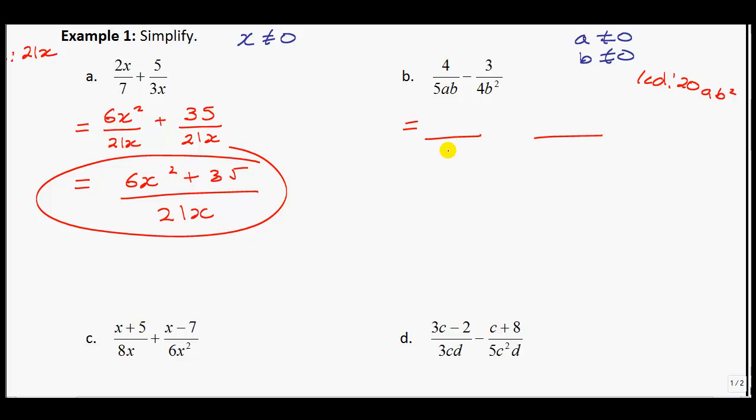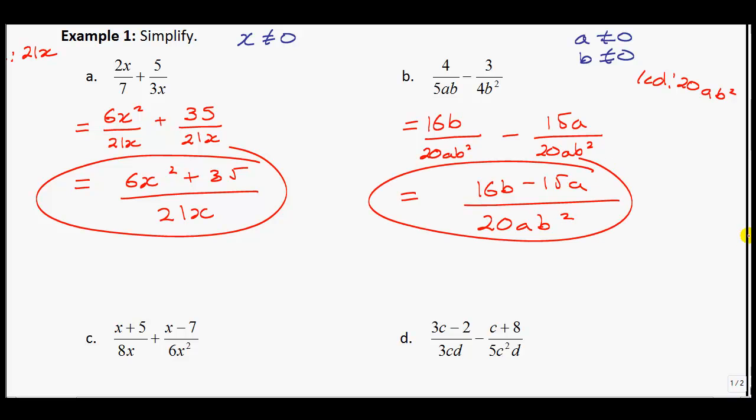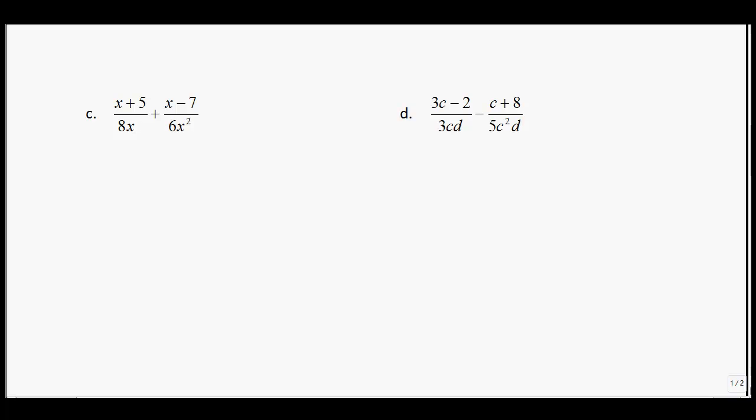So each expression I'm going to write as 20AB squared. What do you multiply 5AB by in order to get 20AB squared? You multiply it by 4B, giving me 16B up here. The 4B squared, you multiply it by 5A, giving you minus 15A when you multiply the 3 by the 5A. Gathering my terms, all putting it over the same common denominator, that is my solution.